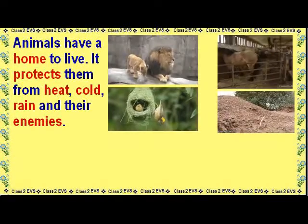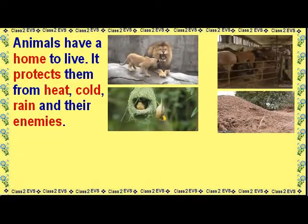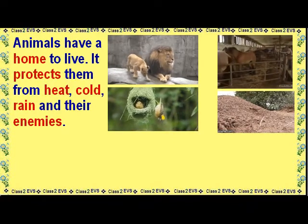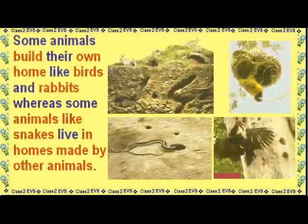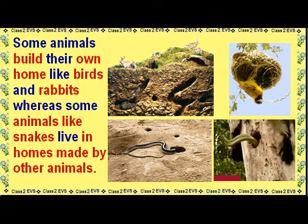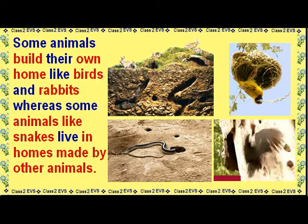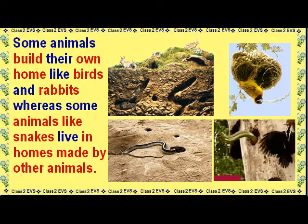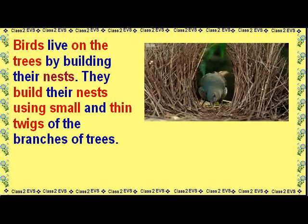Animals have a home to live. It protects them from heat, cold, rain, and their enemies. Some animals build their own home, like birds and rabbits, whereas some animals like snakes live in homes made by other animals. Birds live on the trees by building their nests. They build their nests using small and thin twigs of the branches of trees.